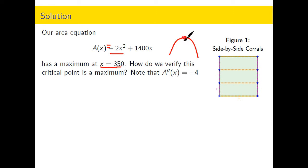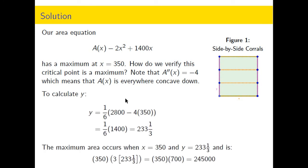So now we just need to calculate what y is. We can substitute x back into the constraint equation, so we're substituting in the 350 for x, and we solve this and we find out that the dimensions of these pens: they should be 350 feet along this side.